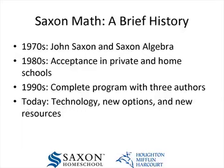By the 1980s, he had developed an algebra program as well as upper-level math programs for Algebra 1, Algebra 2, Advanced Math, and Calculus. At this time, Saxon Math was starting to be accepted both in private schools and in home schools — two groups open and flexible enough to use this new approach. By the 1990s, Saxon offered a complete program with three authors: John Saxon with Frank Weing for the upper grades, Stephen Haake for the middle grades, and Nancy Larson for the lower grades.